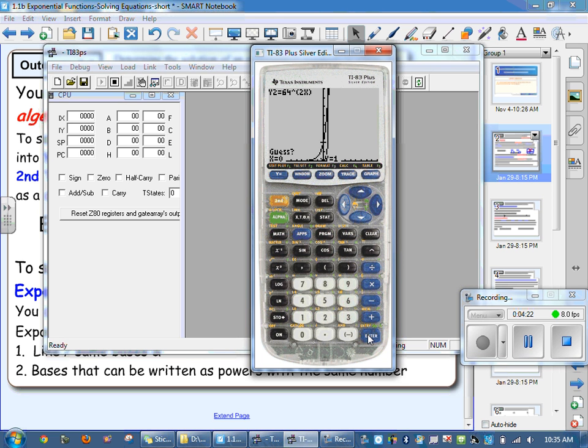And then enter 3 times. Enter, enter, enter. It's going to tell you my intersection. It's going to say it's at 1 and 4096. 1 and 4096. So that gives me my solution.